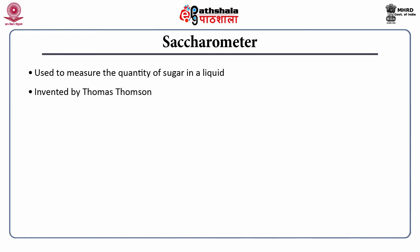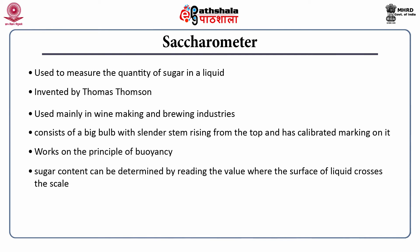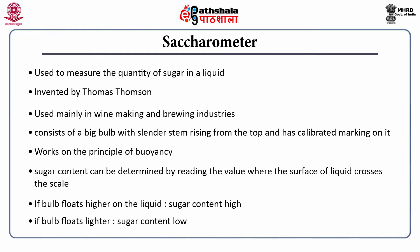The saccharometer was invented by Thomas Thompson and is used mainly in wine making and brewing industries. It consists of a big bulb with a slender stem rising from the top and has calibrated markings on it. It works on the principle of buoyancy. Sugar content can be determined by reading the value where the surface of the liquid crosses the scale. If the bulb floats higher on the liquid, the sugar content is high; if it floats lighter, the sugar content is low.